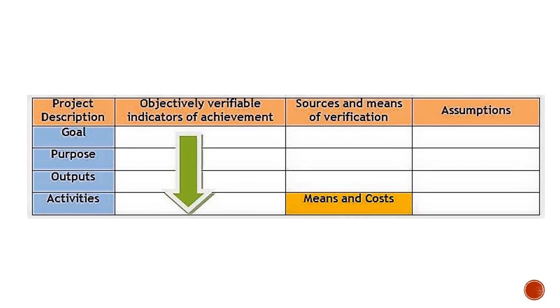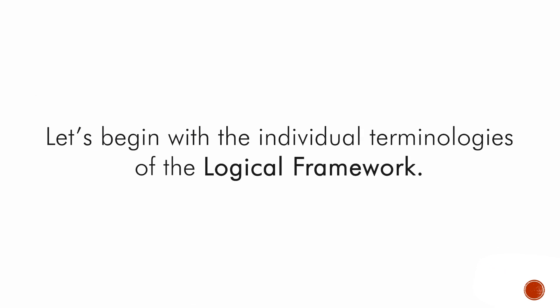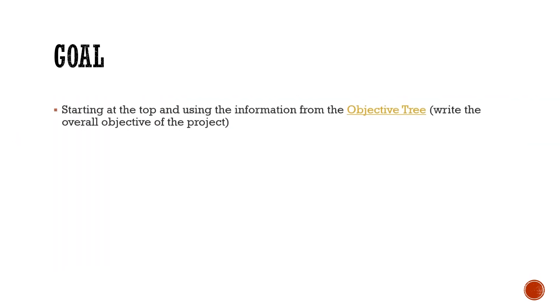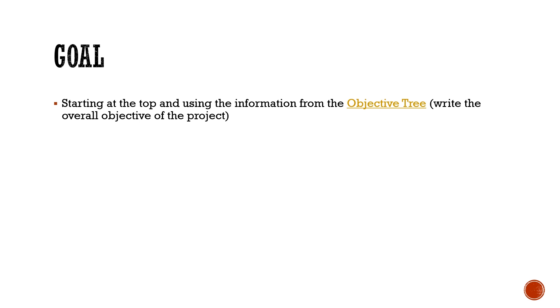In the simple format, we have the template — the logical framework. Now let's begin with the individual terminologies of the logical framework in the project, starting with the goal. Goal is the first part of the first column, and goals start from the top. In the goal, we collect and write the information that we gather from the objective tree — the overall objective tree.